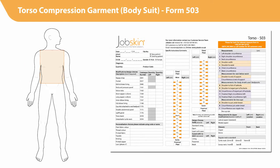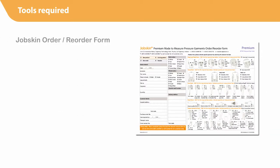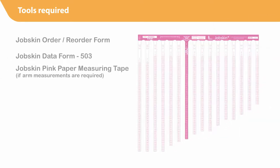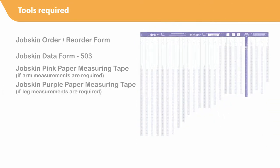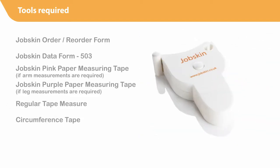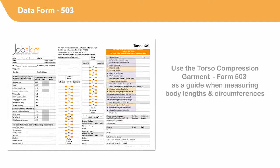Torso compression garment bodysuit, Form 503. When performing measurements for the torso bodysuit compression garment, you will require the following tools: Job Skin order/reorder Form 503, Job Skin data Form 503, Job Skin pink measuring paper tape if arm measurements are required, Job Skin purple measuring paper tape if leg measurements are required, regular tape measure, circumference tape, measuring stand, and adhesive tape.